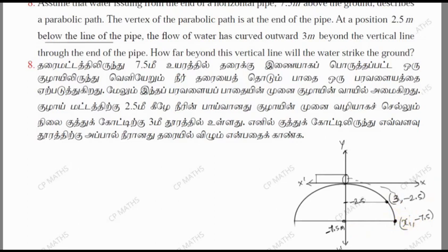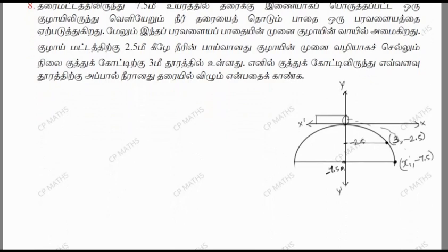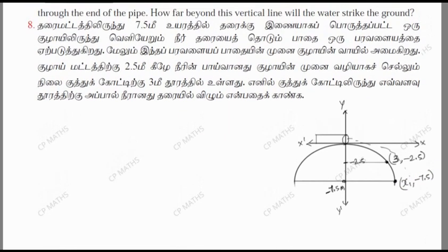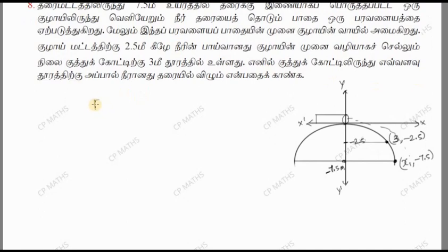If we can define this path, the first point involves 4a and the second point is x1. The parabola general equation is open downward, so x² equals minus 4ay. The equation of the parabola is x² equals minus 4ay.